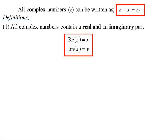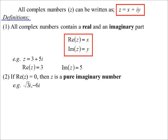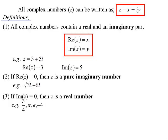So z = 3 + 5i: the real part is 3, the imaginary part is 5. If the real part equals zero, that's what we call a pure imaginary number — examples include √3·i and -6i, basically any multiple of i with no real part. And what you've been dealing with all along is when the imaginary part equals zero — and of course that's what we call a real number.